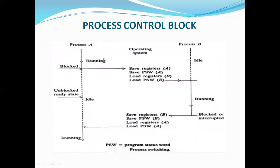Consider two simultaneous processes — process A and process B. Process A is in running condition — the solid line means running condition. Process A is in running condition up to a certain point, then process A gets blocked. When process A gets blocked, all process A related information will be stored — saved registers of A, saved program status word of A — so how much of process A was executed and the execution-related information up to that point gets stored in the program stored status word. Meanwhile, process B is in idle condition.